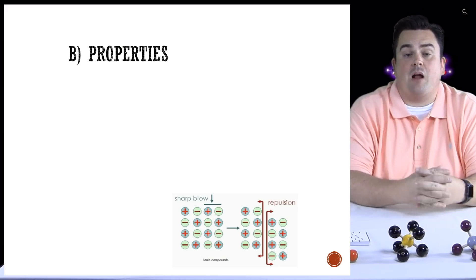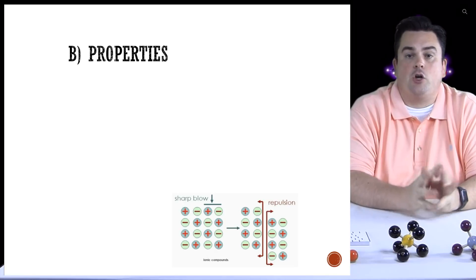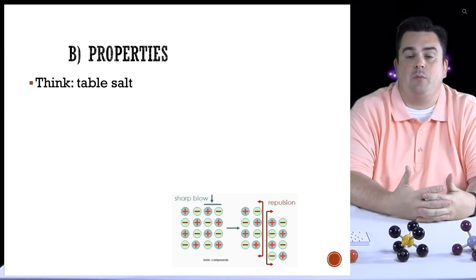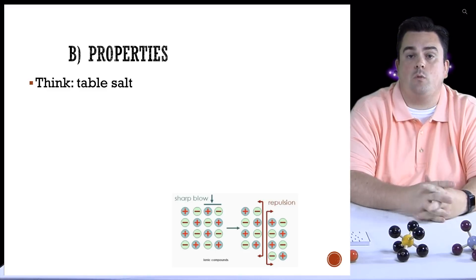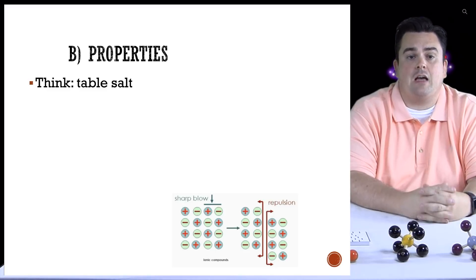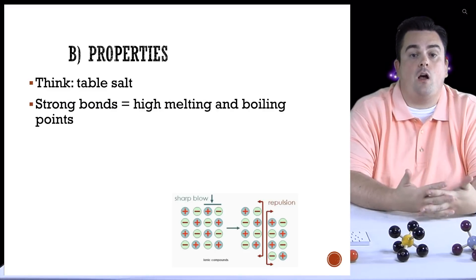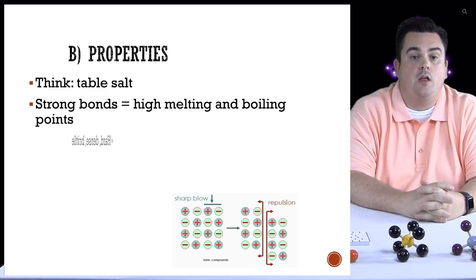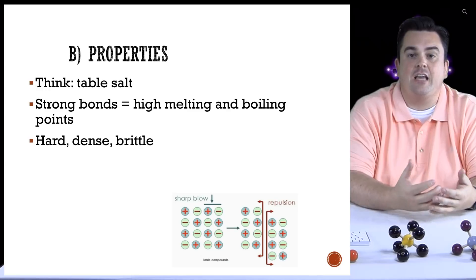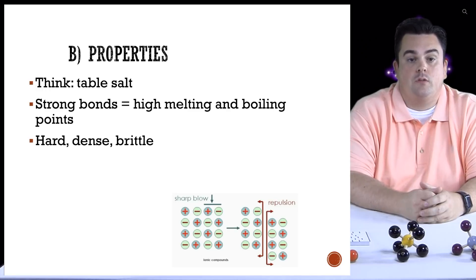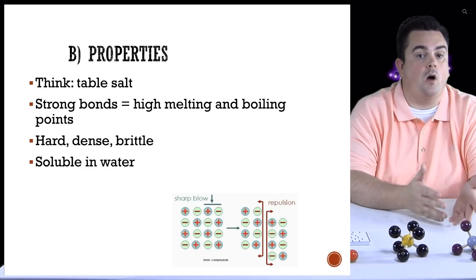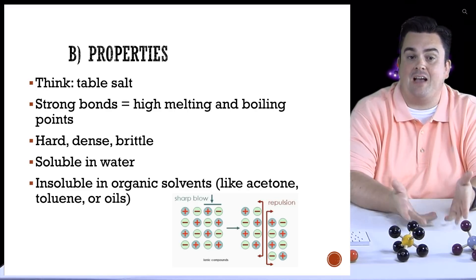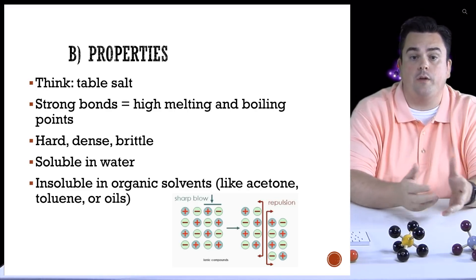Let's take a look at some properties of ionic solids. A good example you should be very familiar with is table salt — think of table salt when thinking of ionic solid properties. They're strong bonds which means they have high melting points and boiling points. They're hard, dense, and brittle. They're soluble in water but insoluble in organic solvents like acetone, toluene, or oils.